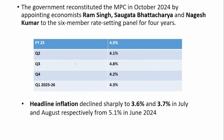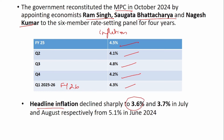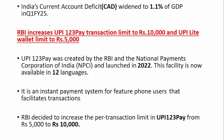The government has reconstituted the MPC with three new members: Ram Singh, Saugata Bhattacharya, and Nagesh Kumar. The inflation projection for FY25 is 4.5% — Q2 at 4.1%, Q3 at 4.8%, Q4 at 4.2%, and Q1 of FY26 projected at 4.3%. Headline inflation declined sharply to 3.6% and 3.7% in July and August respectively, down from 5.1% in June — well within the 4% target. India's current account deficit widened to 1.1% of GDP in Q1 FY25.